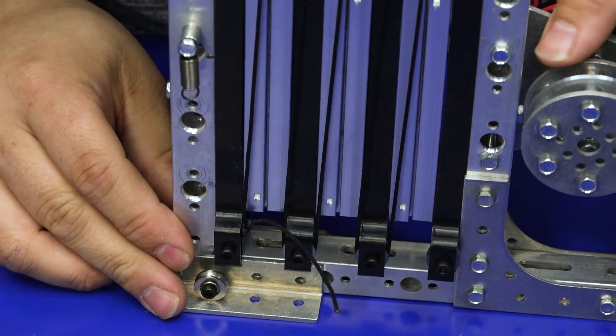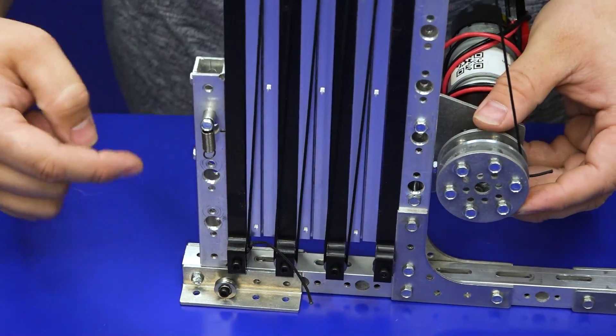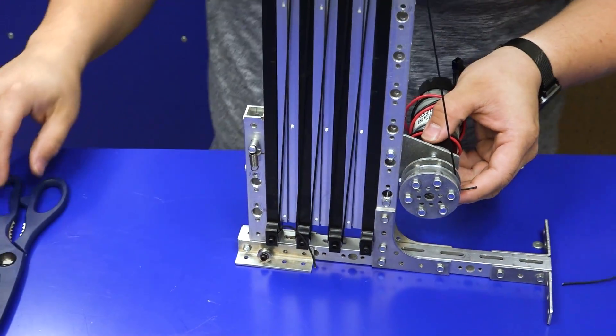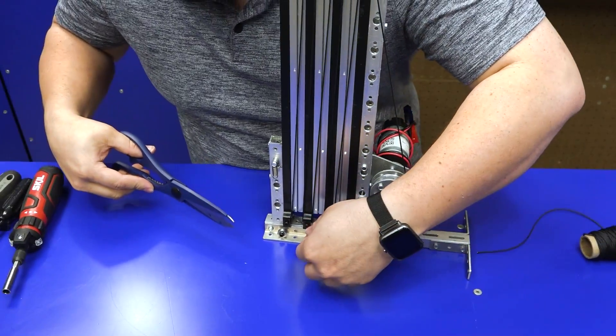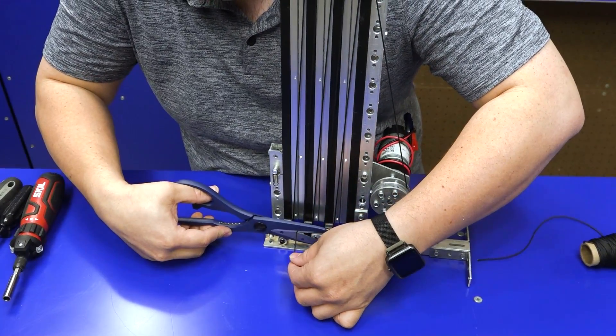So now if we twist our spool, it's going to remove all this slack in the line. And if we have a little bit of extra cable here, we can cut this shorter again.